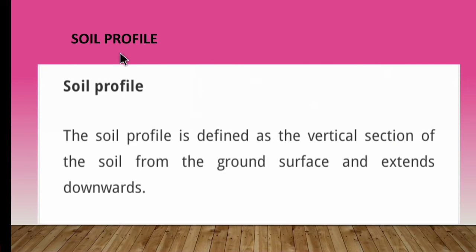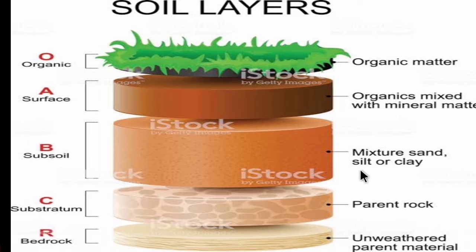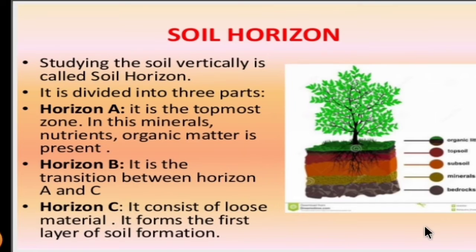Next, soil profile. Soil profile is defined as the vertical section of the soil from the ground surface extending downwards. Looking at the pictorial representation: this vertical section of the soil layer is called the soil profile. The top layer is covered by organic matter such as plants and roots. Below that is a layer of organics mixed with mineral matter, and deeper still is clay or sand — a mixture of sand, silt, or clayey substance — followed by parent rock and unweathered parent material.